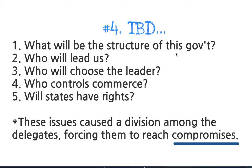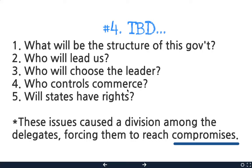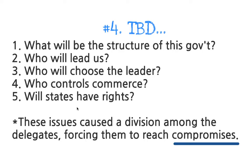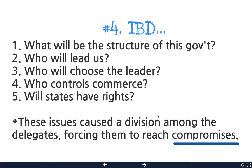Things they had to determine: How many branches of government would they have? If they followed Montesquieu's plan of three branches, who would lead — a king? They knew they needed a leader but were torn on what type. How would they pick this leader — would someone pay for it, or would people elect them? Does everybody get to vote or just a few? Who controls commerce — which means trade? And will states have the rights to decide things, or will the federal government? With people on different sides, in order to get seven states to agree on anything, they had to have a compromise — meaning both sides give up something to get something.